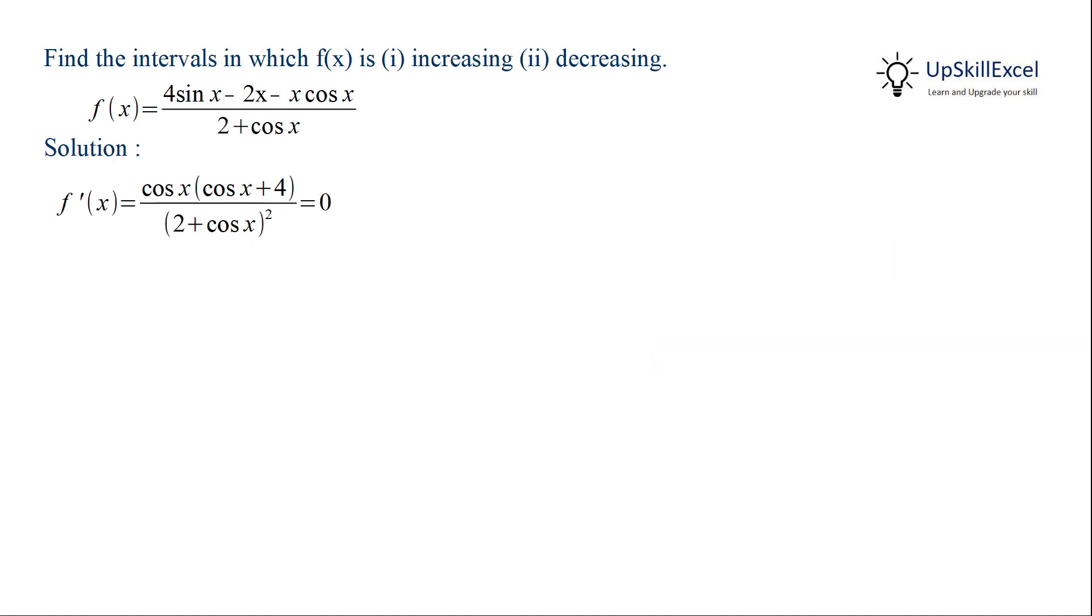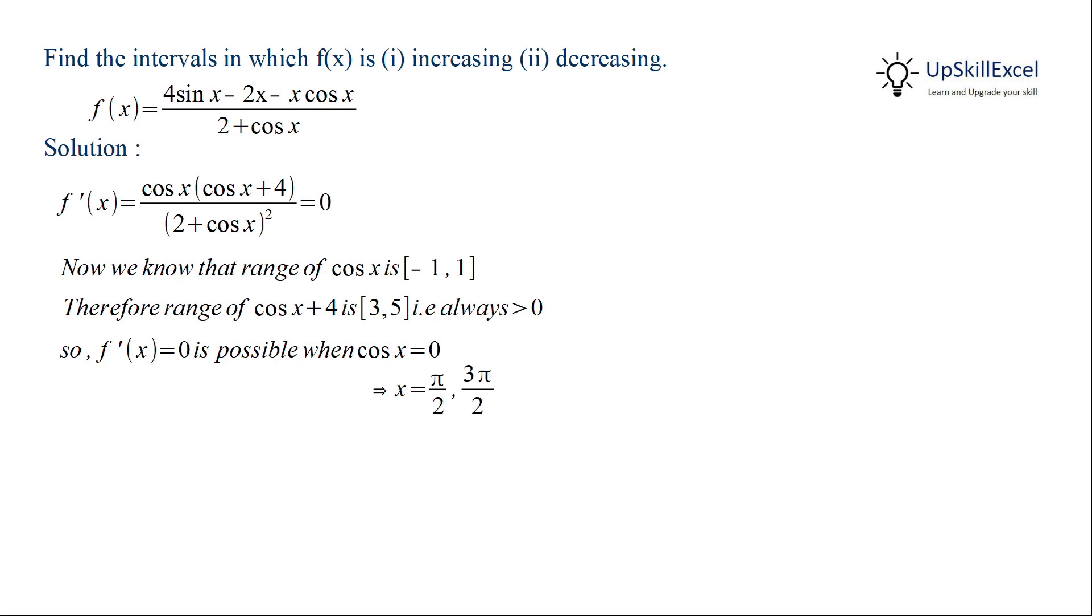Now to find the interval we have to find the critical points. Here we observe that cos x has a range of minus 1 to 1. So the second term, cos x plus 4, has range 3 to 5, meaning it will always be greater than 0. So the only possible solution for f prime x equals 0 is when cos x equals 0, and we know that cos x equals 0 when x equals either π by 2 or 3π by 2.